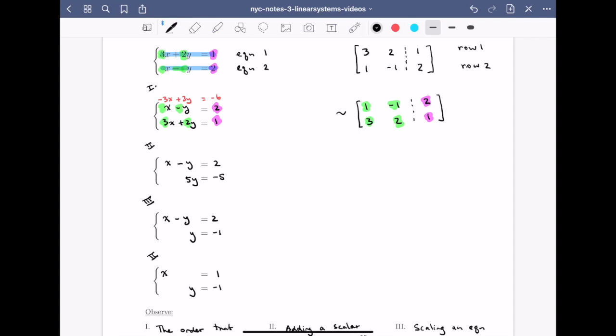The next operation that I'm going to do is I'm going to take row 2 and I'm going to replace it by row 2 plus minus 3 times row 1. So as before, we added a scalar multiple of the first equation to the second equation. Here, I'll do the exact same thing, just dealing with rows.